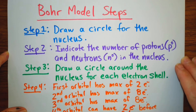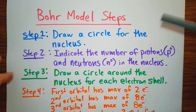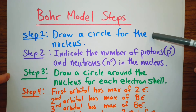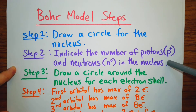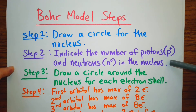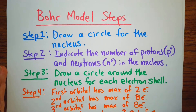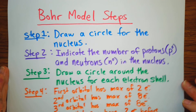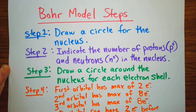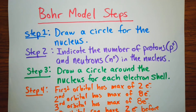So the steps to drawing a Bohr model: the first thing you're going to do is draw a circle for the nucleus. Step two, you're going to indicate the number of protons and neutrons in the nucleus. You do have to understand how to determine those numbers — I have a video on that and I'll leave it in the description.